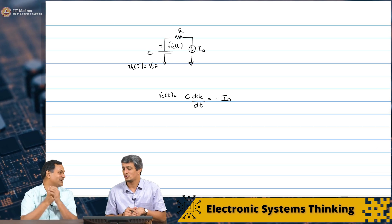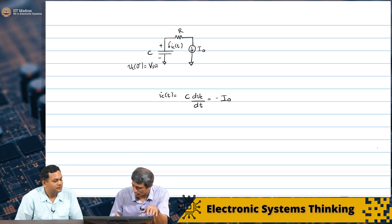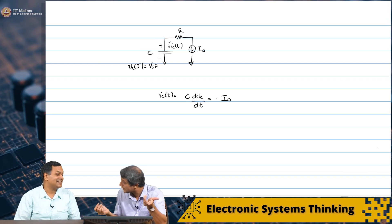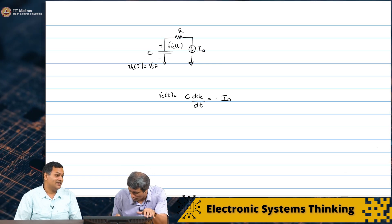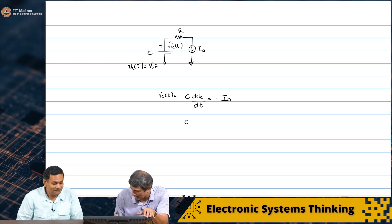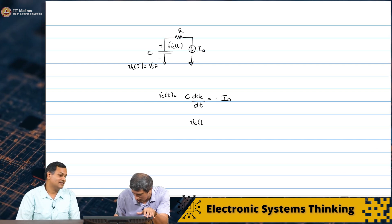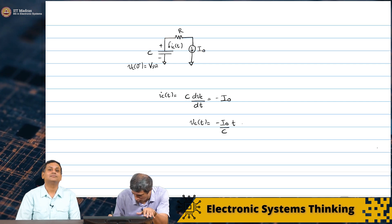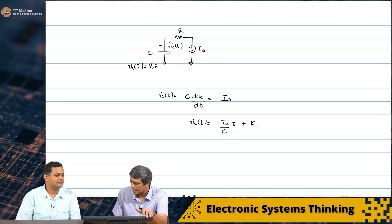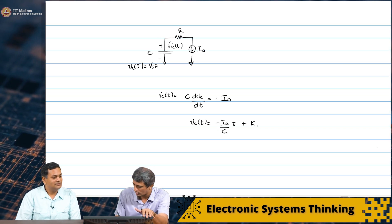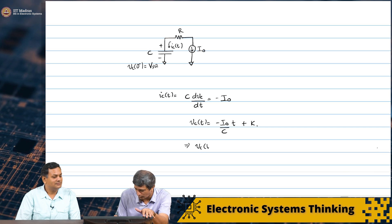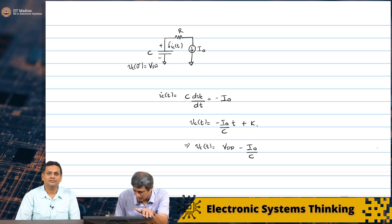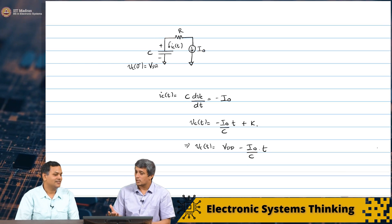You can just do KCL on the two ends of the resistor. The equation is exactly the same as before. So Vc(t) equals minus I₀/C times t plus a constant. At t=0, Vc = Vdd, which implies Vc(t) = Vdd minus (I₀/C)·t. It is the same thing.